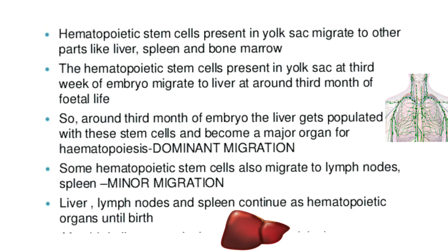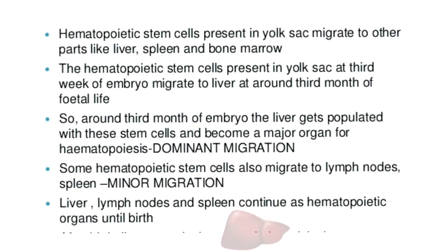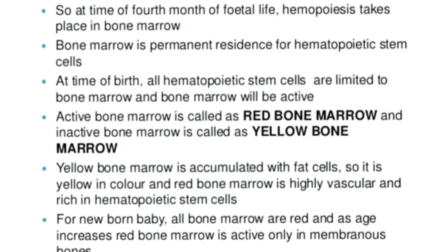Around the third month of embryonic development, the liver gets populated with these stem cells and becomes a major organ for hemopoiesis — this is called dominant migration. Some hematopoietic stem cells also migrate to lymph nodes and spleen, which is called minor migration. By the fourth month of fetal life, hemopoiesis takes place in the bone marrow.